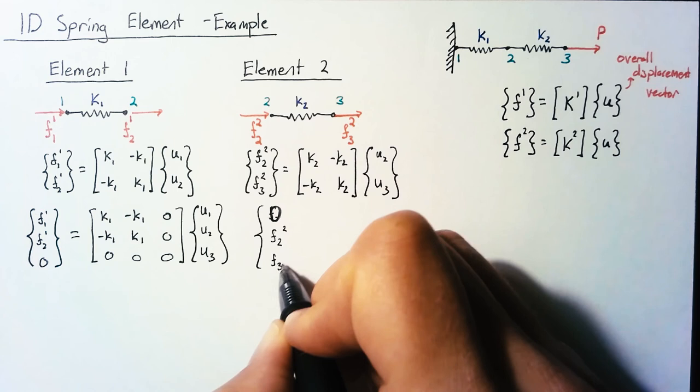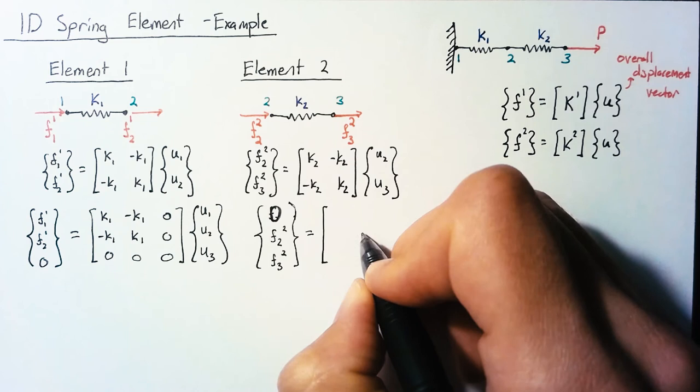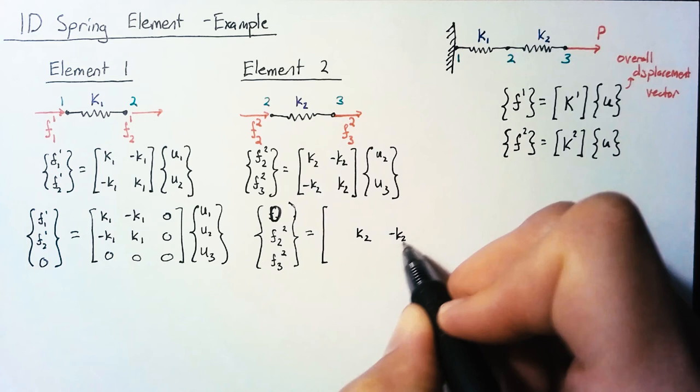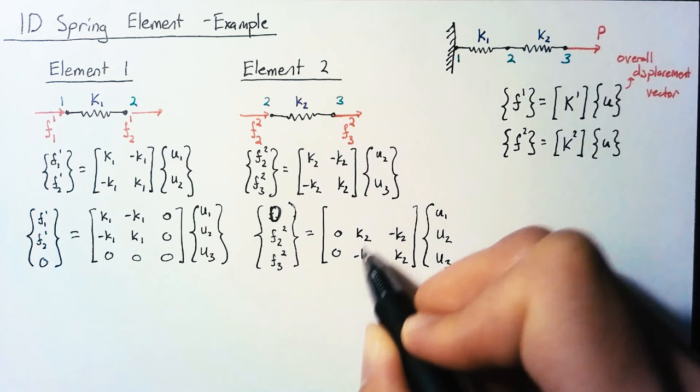The bottom right-hand square is going to be just the same stiffness matrix. Zeros in the u1 spot because this stiffness is not dependent on the u1 displacement. And then finally, we have an empty row up top.